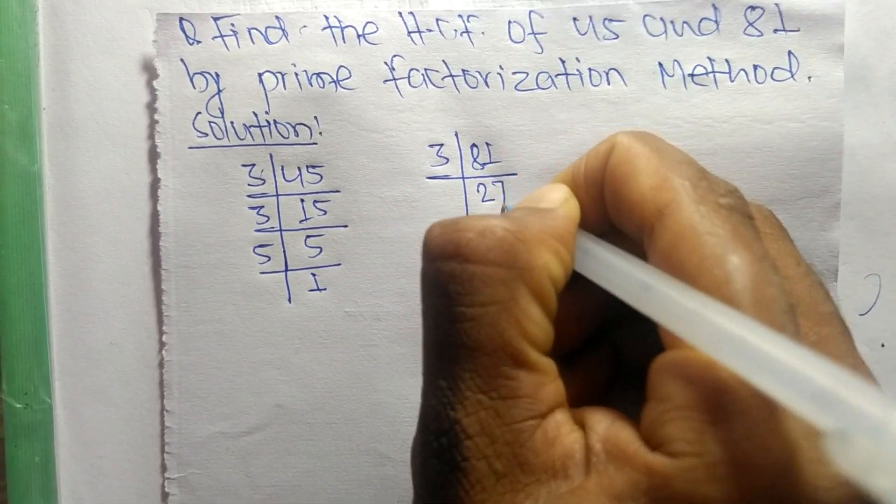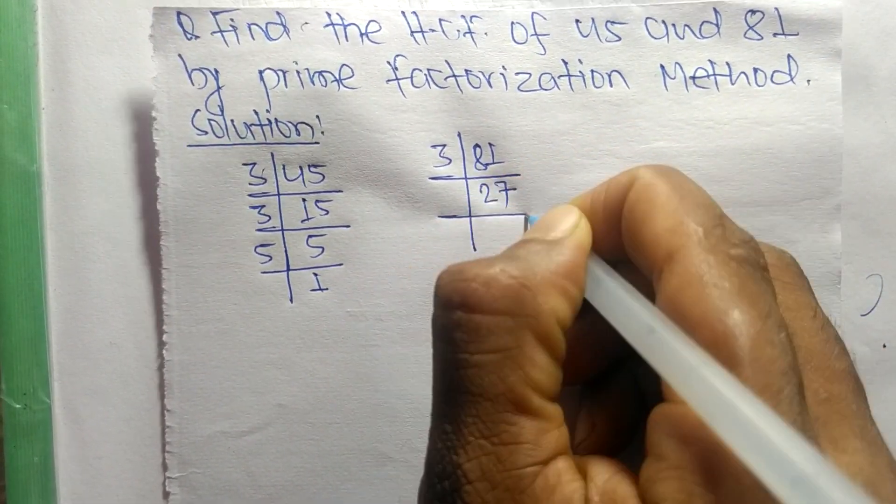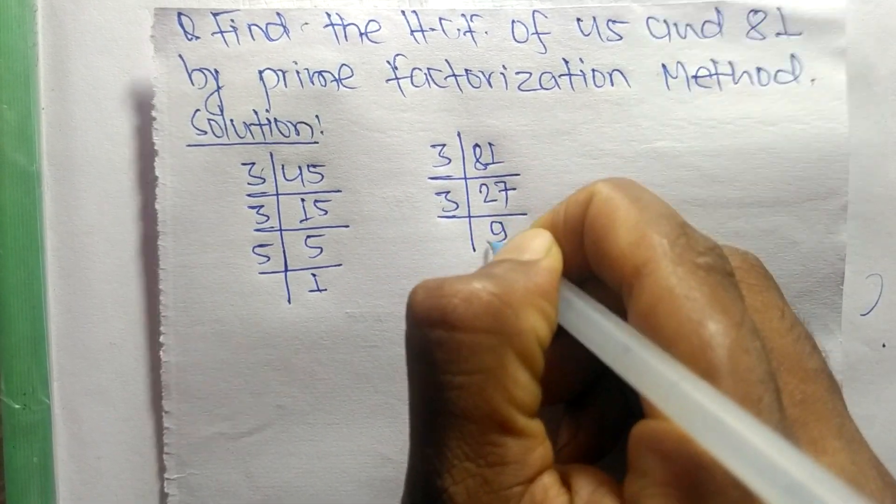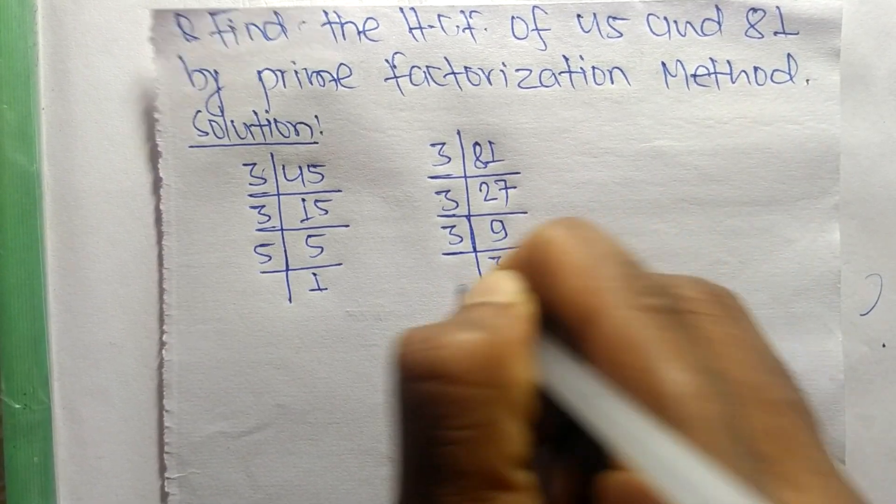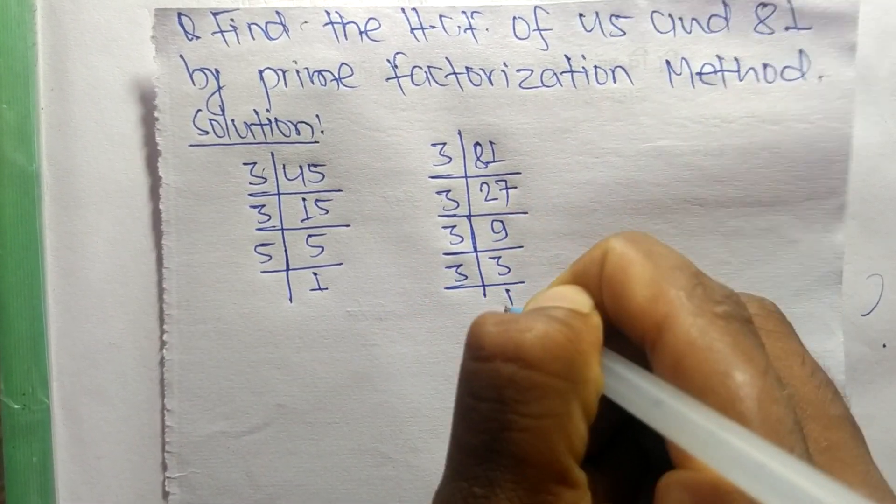3 times 27 equals 81, 3 times 9 equals 27, 3 times 3 equals 9, and 3 times 1 equals 3.